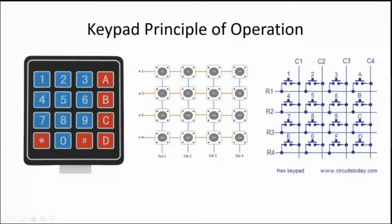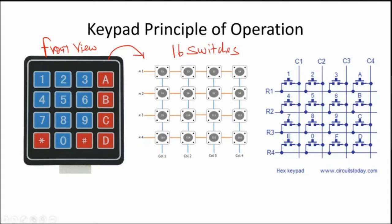Let us understand the internal composition of the keypad and see how it works before interfacing with Arduino. What you see physically is the front view of the keypad. If you peel off the front sheet and look inside, you'll find switches arranged in rows and columns. This keypad essentially has 16 push button switches arranged in a matrix. We have already discussed how a push button switch works.